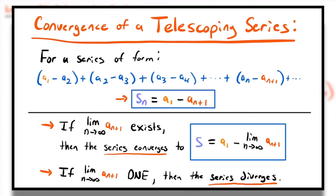To recap: the convergence of a telescoping series is defined as follows. For a series of this form where the middle terms collapse, leaving an nth partial sum of the first term minus the last term, if the limit as n approaches infinity of a sub n plus 1 exists, then the telescoping series converges to s, which equals a sub 1 minus the limit as n approaches infinity of a sub n plus 1. If that limit diverges or does not exist, then the telescoping series also diverges. This definition only applies to telescoping series where terms collapse in this manner.